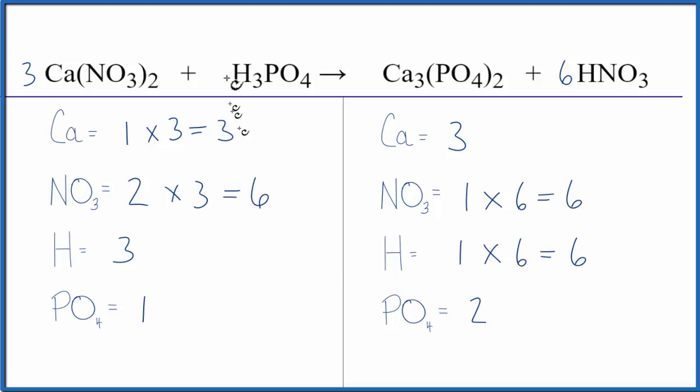Let's just balance the hydrogens. We'll put a two in front of the phosphoric acid. Three times two. That gives us six. And then our one phosphate times two. That'll give us two. So the phosphates are balanced and we're done.